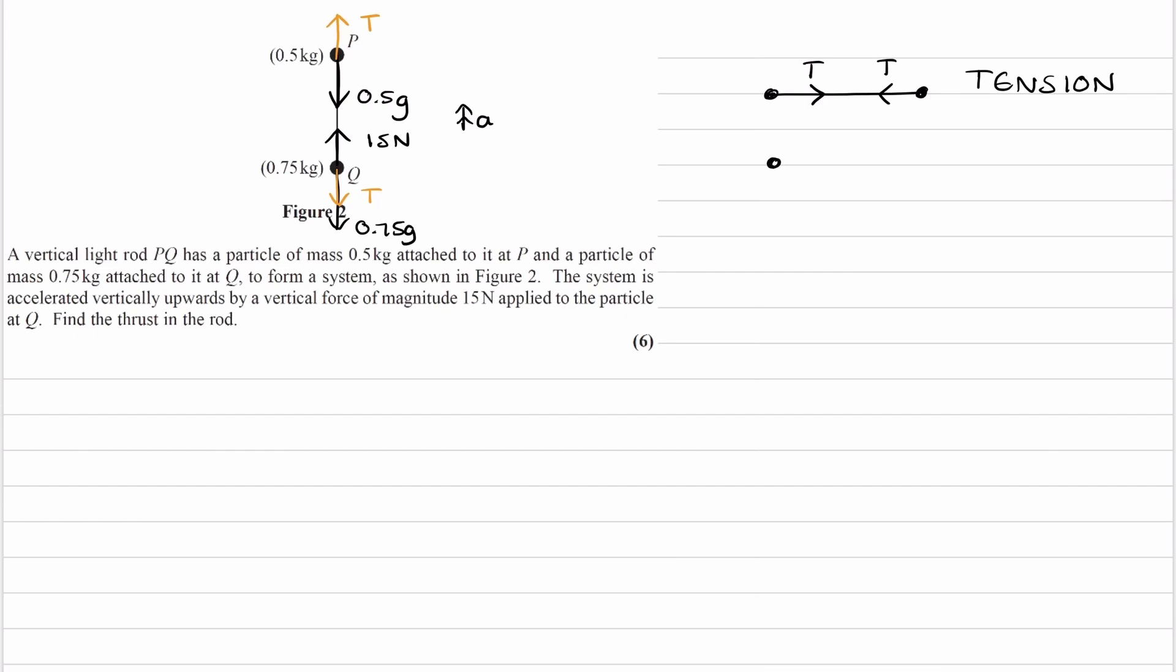For a thrust force, imagine the same scenario. You still have your pen across your chest horizontally, but now instead of pulling it apart, you're pushing it together. When you're pushing together, there is a compressive force in the pen. Whenever you have a compressive force in an object, like a rod or pen, there will be a thrust force in that object. As you compress the pen, pushing your hands together, the pen exerts an outward force on your hands to resist this. Therefore, the thrust force will be towards the left on your left hand and towards the right on your right hand.